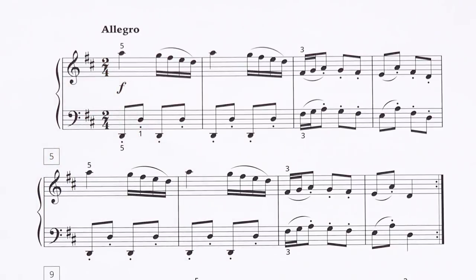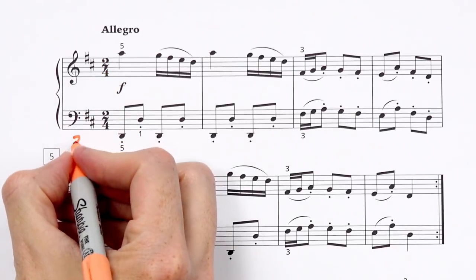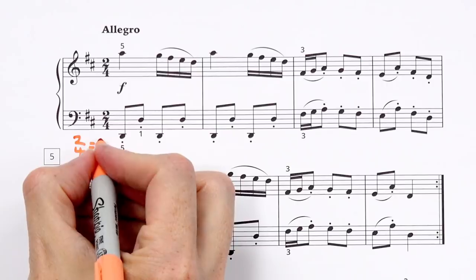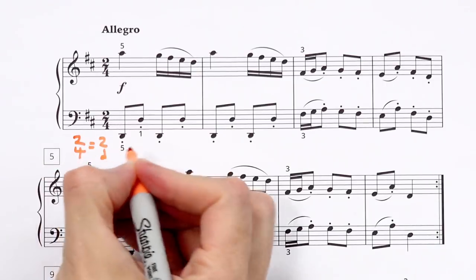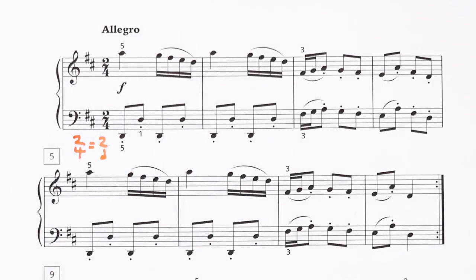So we figured out that we're in D major and then last on the checklist was to see that we're in 2-4 time signature, which tells us that there will be two quarter note beats in every measure.